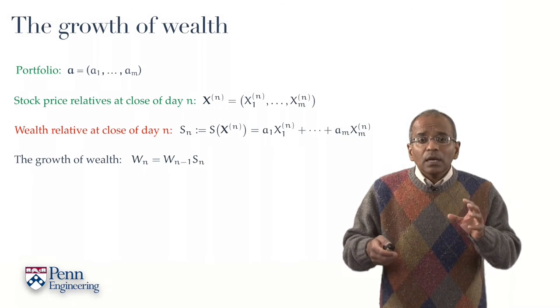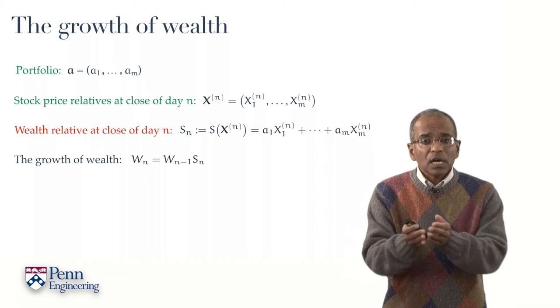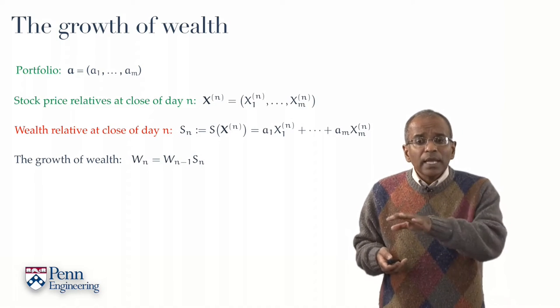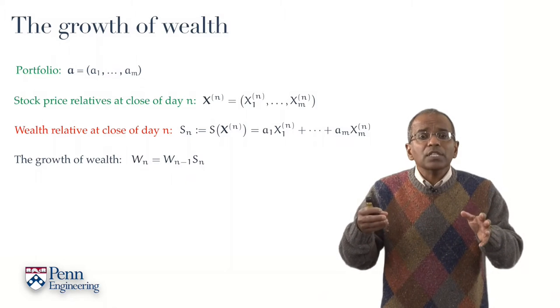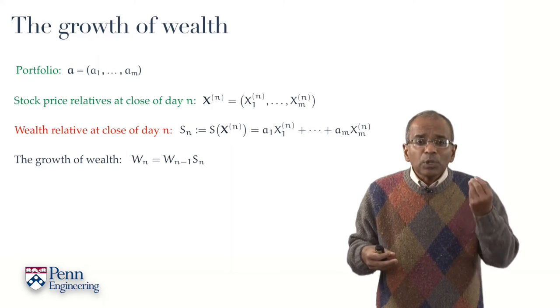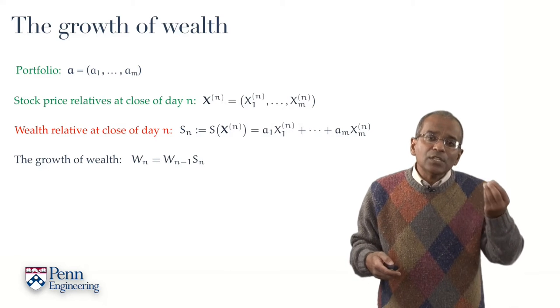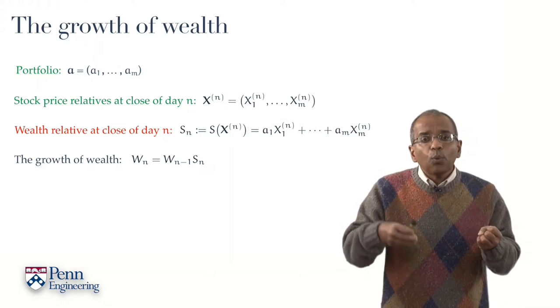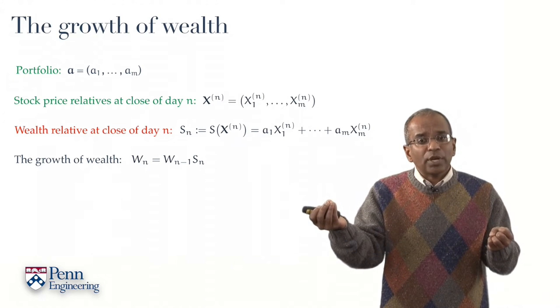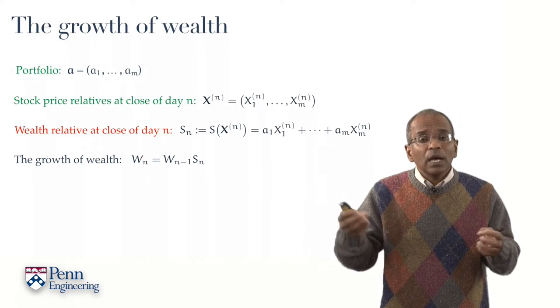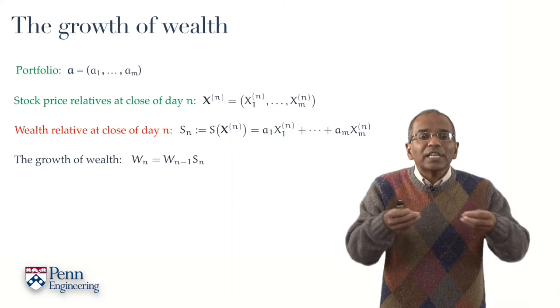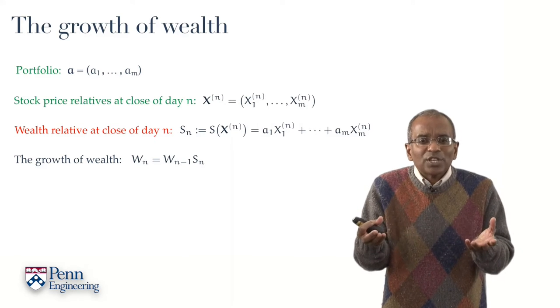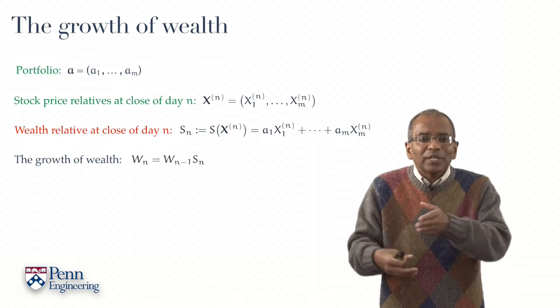Finally, the growth of wealth starting with an initial wealth W_0, which we shall take to be 1, is governed by a simple recursive equation. W_n, the wealth at the end of day n's trading, is given by the wealth at the end of the previous day's trading, W_{n-1}, times the wealth relative for day n. We really can't ask for a much simpler characterization of what's happening to the investment.